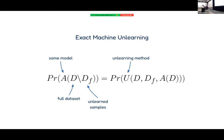Machine unlearning is formally defined as: the probability distribution over the models you could train on the dataset without the data points to be deleted must be exactly equal to the probability distribution that whatever machine unlearning method you use produces, given a model trained on the full dataset and told which points to remove. You could fulfill this by simply throwing away the model and retraining from scratch, but that is quite time and energy intensive.